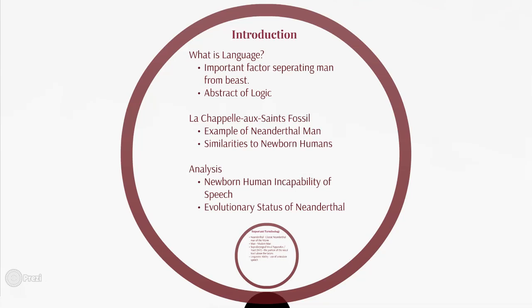The La Chapelle-aux-Saints fossil was discovered in La Chapelle-aux-Saints in France in 1908 by Amadee and Jean Bouyssonie and L. Bardon. It was the first relatively complete skeleton of a Neanderthal and is considered the classic example. The skeleton is about 60,000 years old and shares remarkable similarities to newborn humans, despite the fact that the skeleton is actually of an adult male — probably closer to senior age, well past his prime at the time of his death.